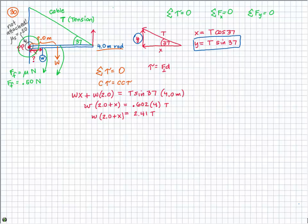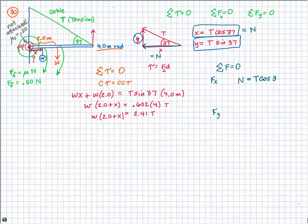Now let's look at the sum of all forces. Because it's in equilibrium, the sum of all forces equals zero. In the x direction, the tension in the cable creates a horizontal force pushing the rod against the wall — this is also your normal force. So the x component of tension equals the normal force. The wall pushes back with equal force by Newton's third law. Therefore, normal force equals T cosine 37, and since cosine 37 is 0.8, normal force equals 0.8T.